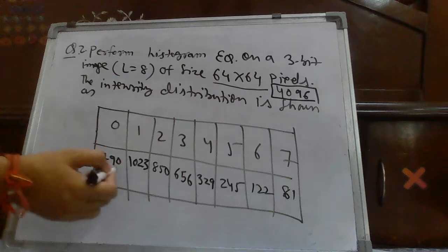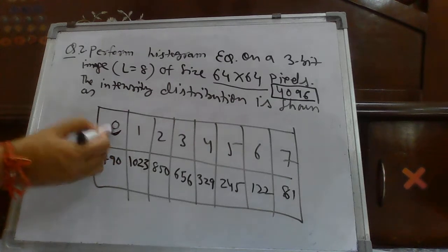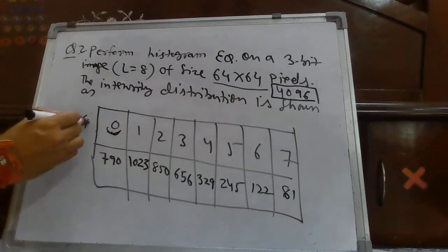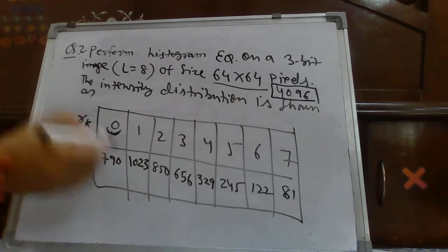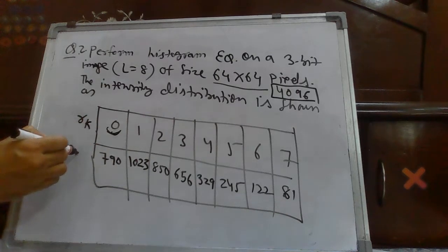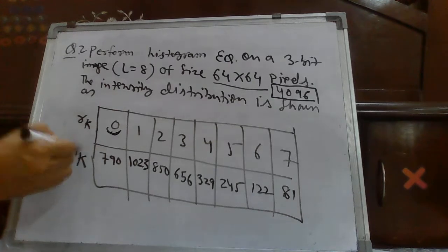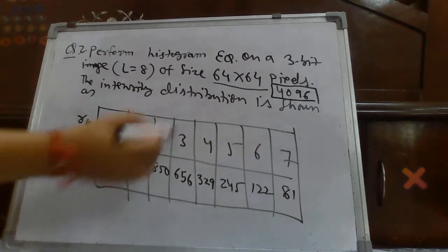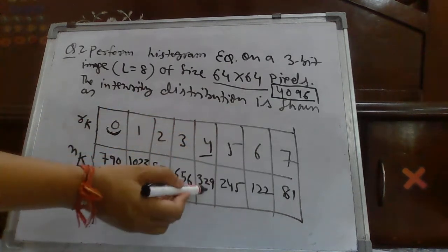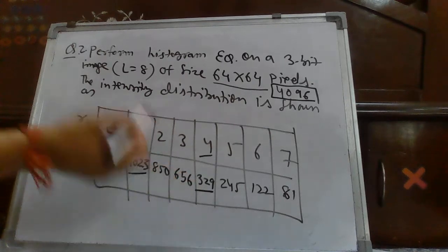How many number of pixels are in that particular gray label? This is simply representing RK or intensity at K and this is simply indicating NK. NK means number of pixels having K intensity value. So, let's say 4 is a intensity value. How many number of pixels are there? 329.